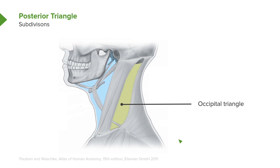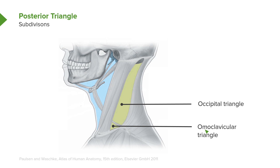The second and final subdivision of the posterior triangle is the omoclavicular triangle. This small area is bounded by the posterior belly of the omohyoid — hence 'omo' in the prefix — and the clavicle, hence 'clavicular' as the suffix. The third boundary of this triangle is the sternocleidomastoid.